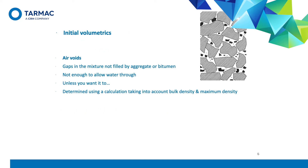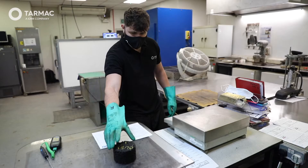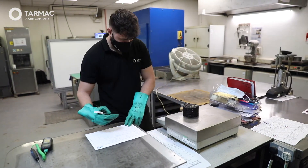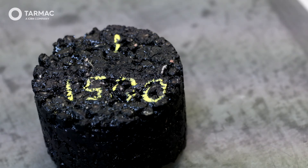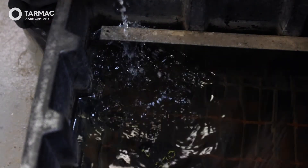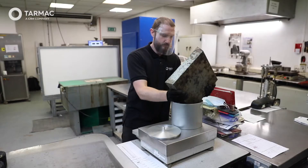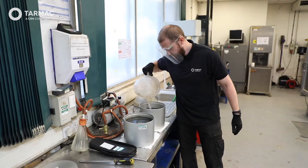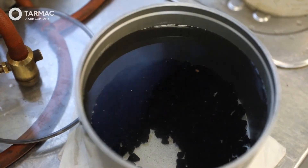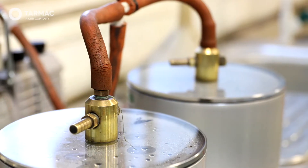Air voids are the gaps in the mixture not filled by aggregate or bitumen. They are a good indicator of how a mix will perform. We can calculate the void content of asphalt using the bulk density and the maximum density of the mix. Bulk density is usually carried out on lab-compacted specimens. The specimen is weighed in air and water to determine its volume, which in turn is used to calculate its density. Maximum density is carried out on uncompacted loose material broken down as much as possible — it's the density of the mixture without any air voids present, hence the term maximum density.